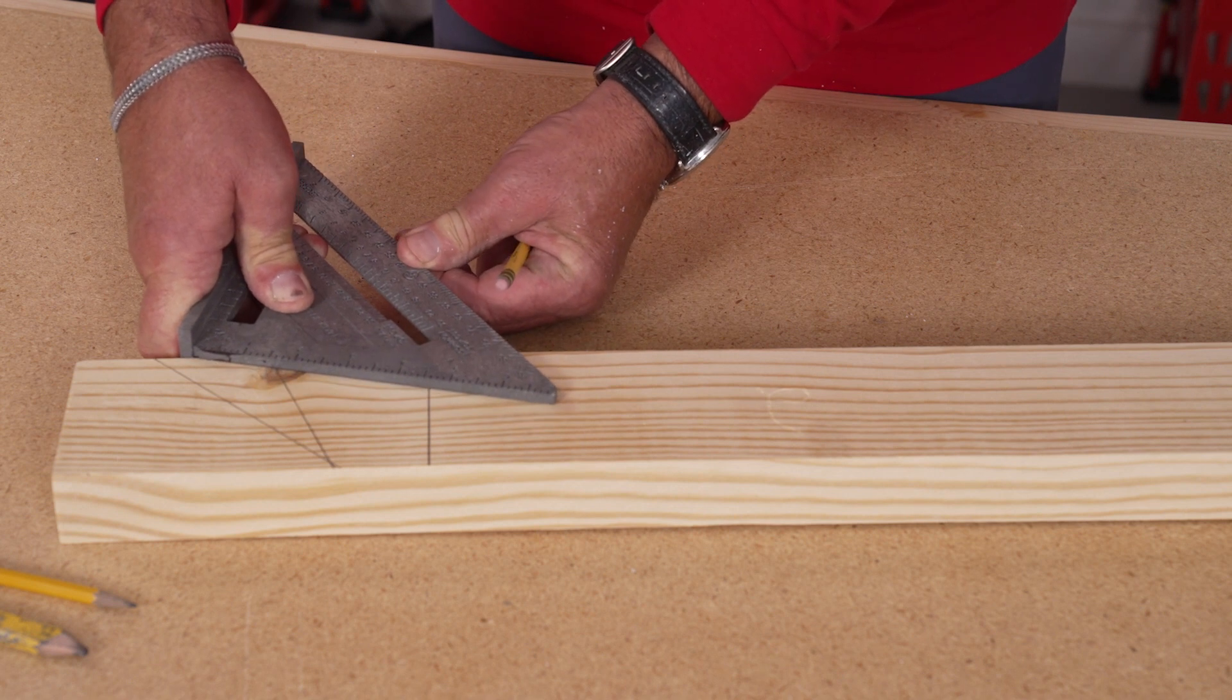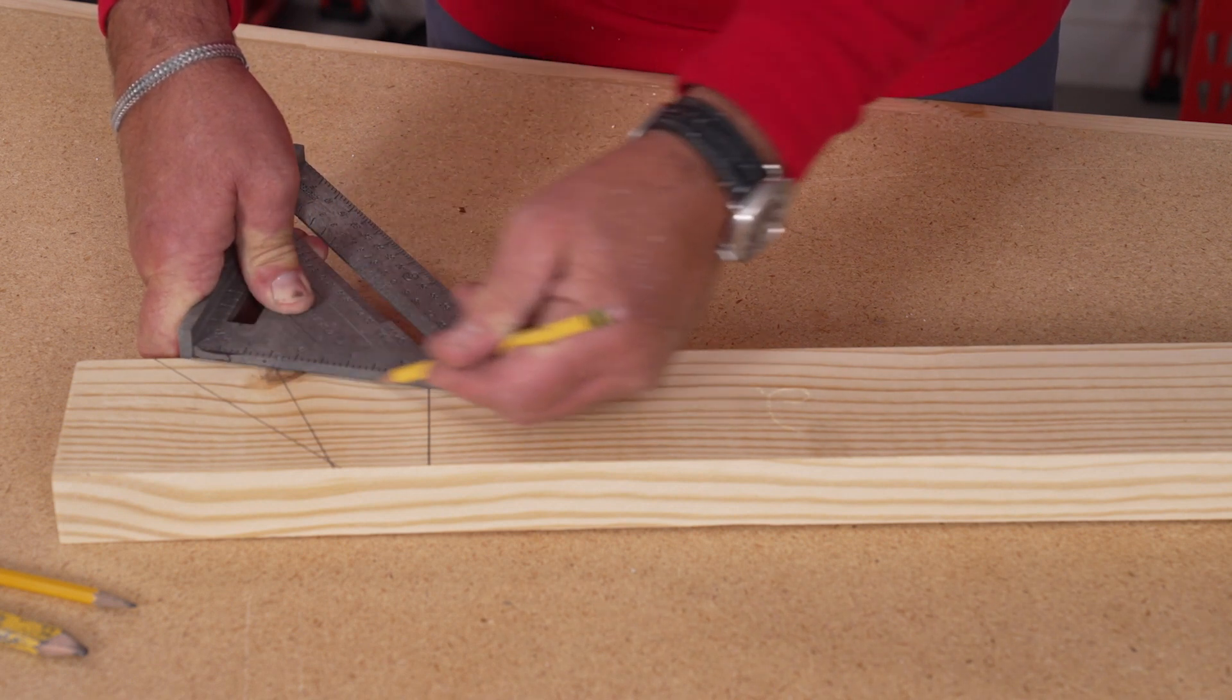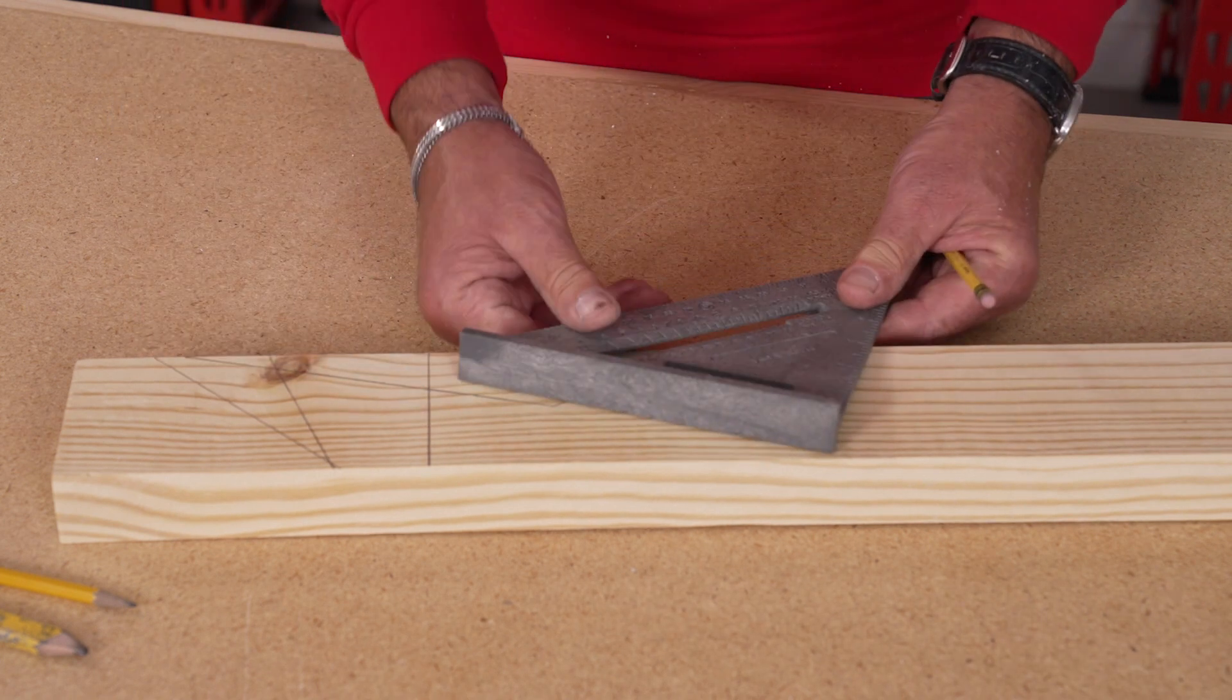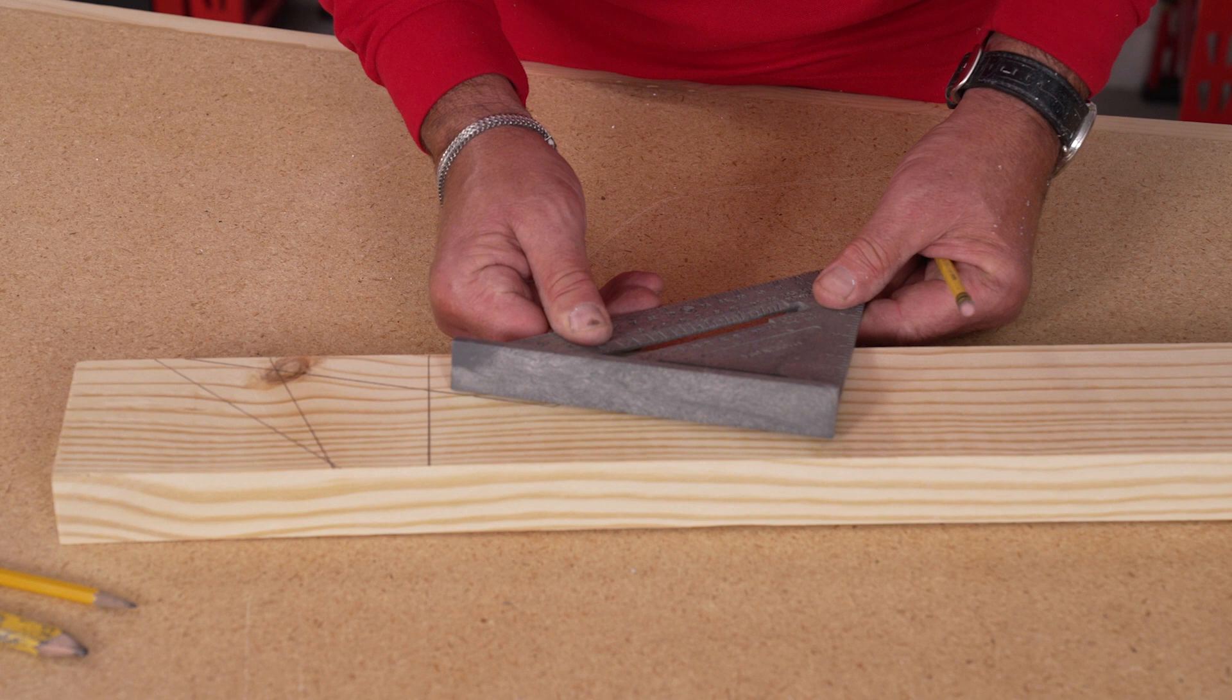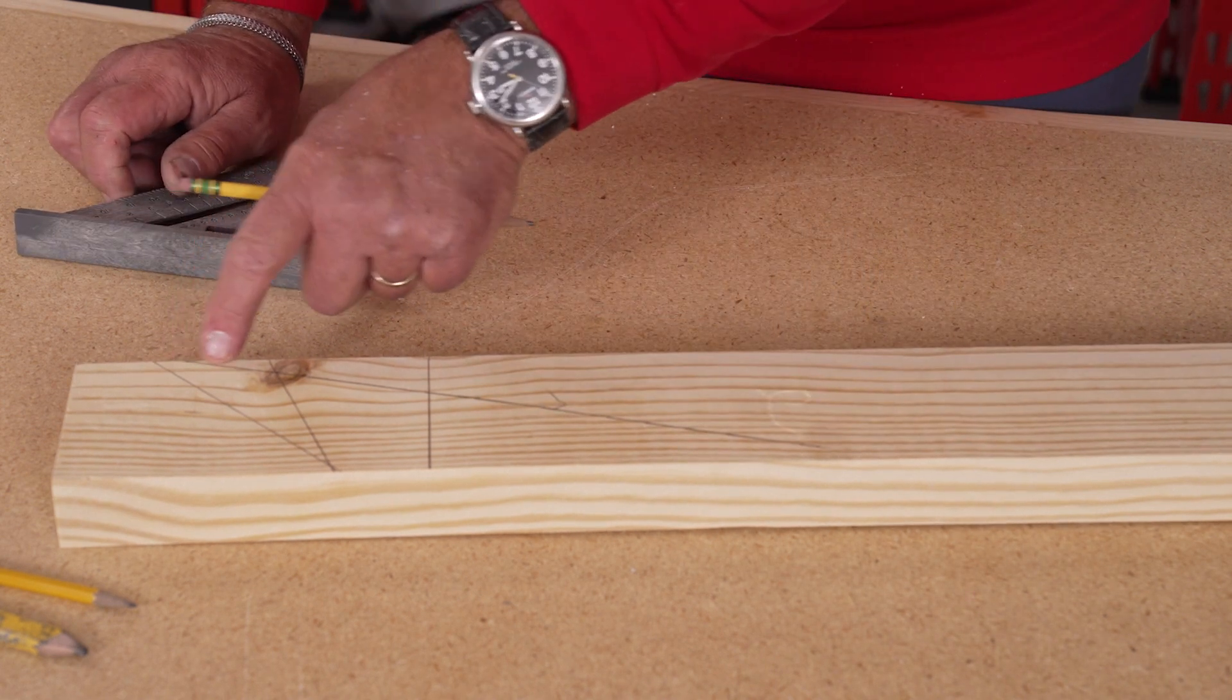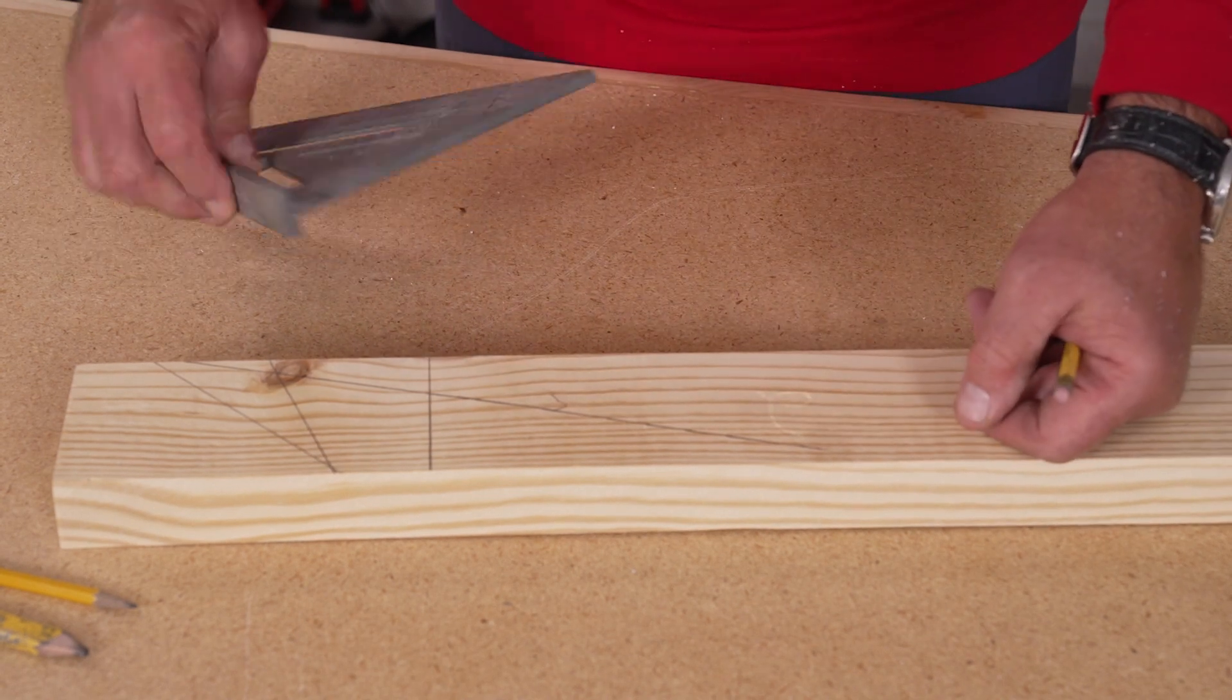This would be a 75 degree angle coming off of this that you could cut a very long cut that then you could spin around the speed square to extend that line that you drew, and that's a 75 degree angle.